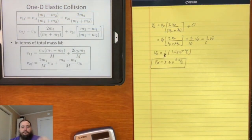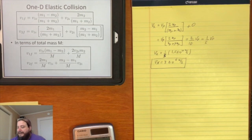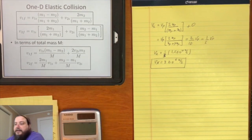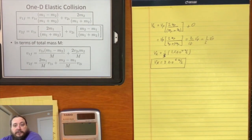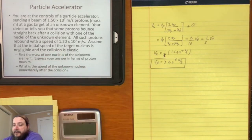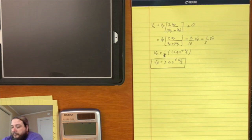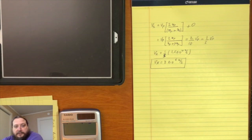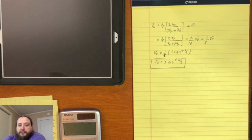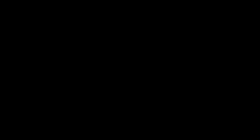Those are some examples of inelastic and elastic collisions in one dimension. Next time we will look at two-dimensional collisions and also explosions, which are kind of perfectly inelastic collisions in reverse, and do some examples from that.